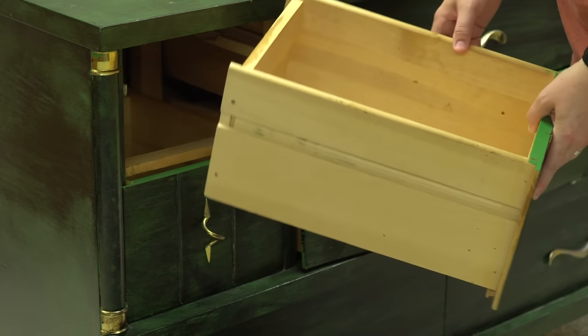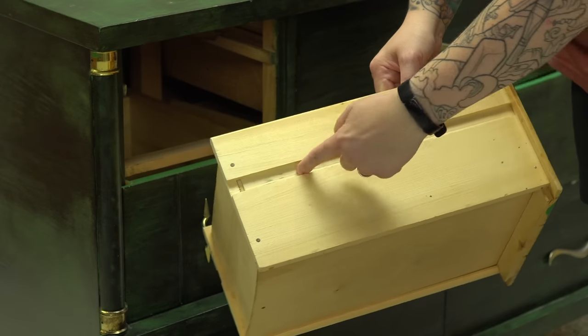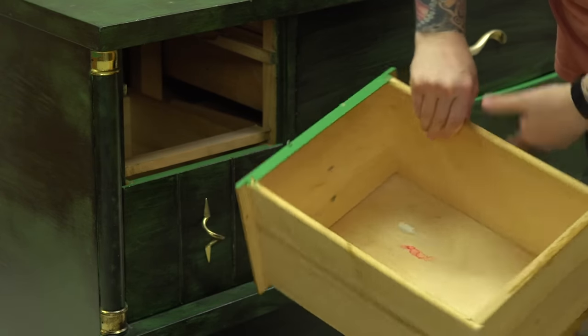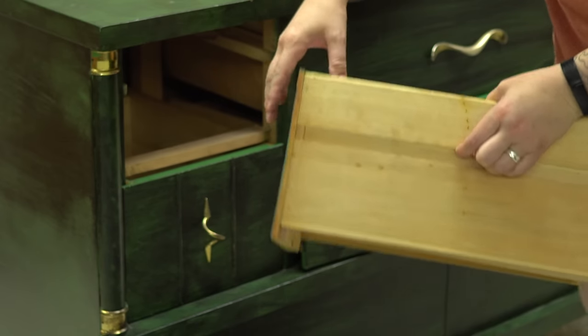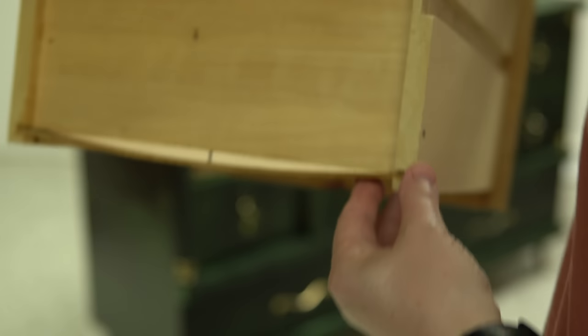Having a look at the drawer itself, it is solid wood. It's not the best construction. They have tracks cut into the side, which is how these pull in and out. This drawer bottom needs to be reattached.